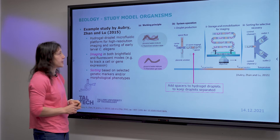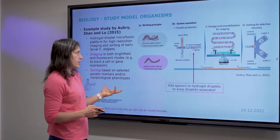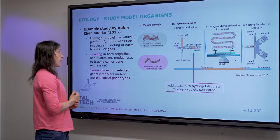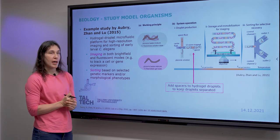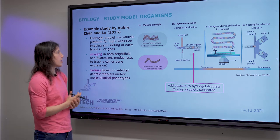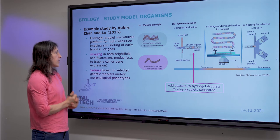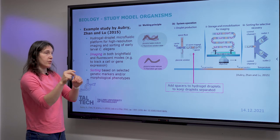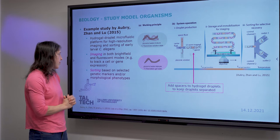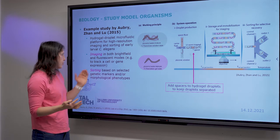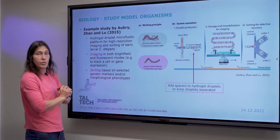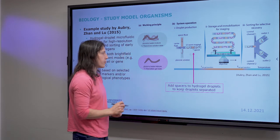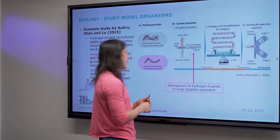What they made was a hydrogel droplet platform for high-resolution imaging and sorting of early larval stages of the worm. They did imaging in both bright field and fluorescence, which means they could image the worm and also track fluorescence genetic markers inside the worm. Based on what they wanted, they could sort the different worms on different morphological phenotypes. Let me quickly go through the actual platform that they have.